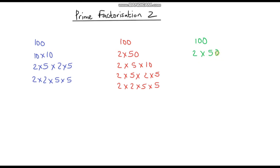So this is going to be 2 times 2 times 25, and then I can break 25 down into 5 times 5, which gives 2 times 2 times 5 times 5.